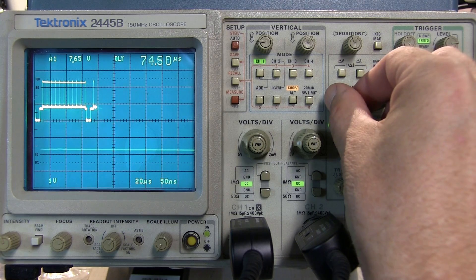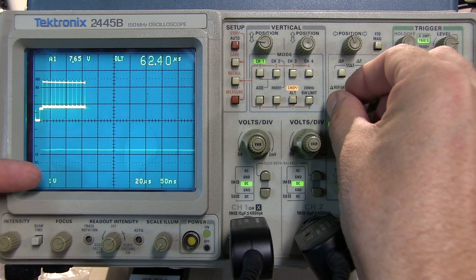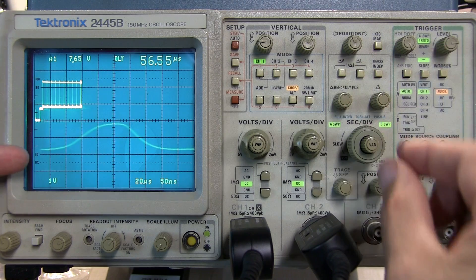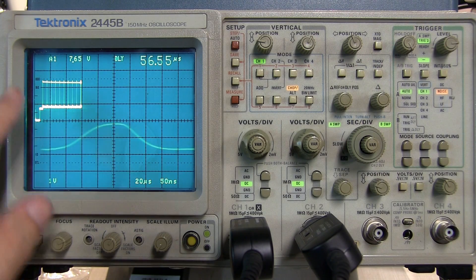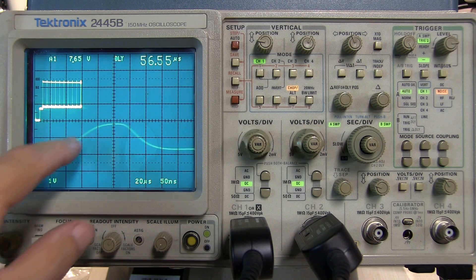You can see as I move my delay I'm extending the A sweep here but it does make this B sweep which is now running a whole lot faster than the A sweep a bit more visible. You notice the difference here, the A sweep is running at 20 microseconds per division, the B sweep is running at 15 nanoseconds per division.